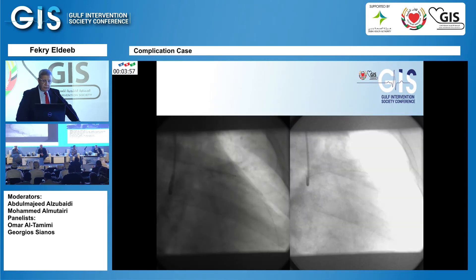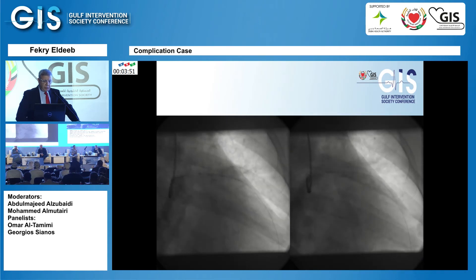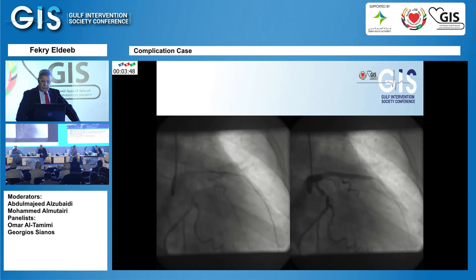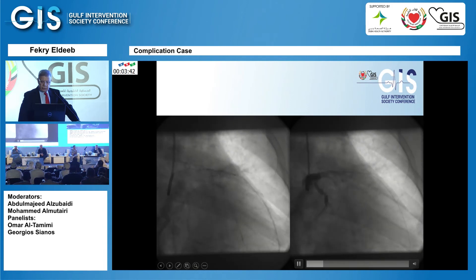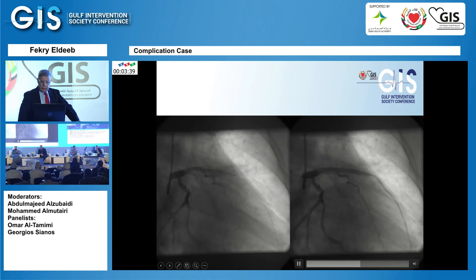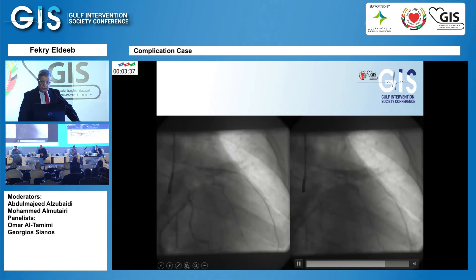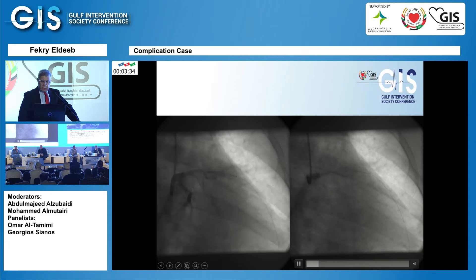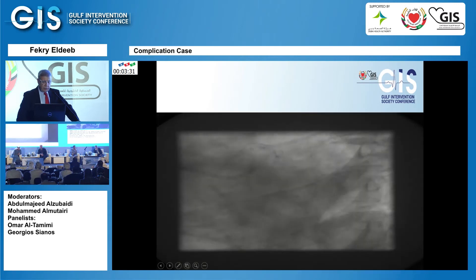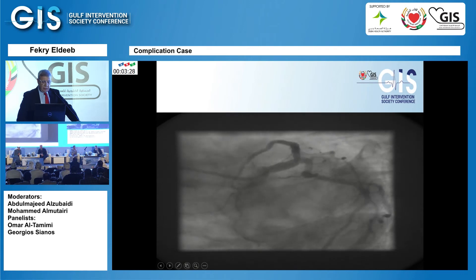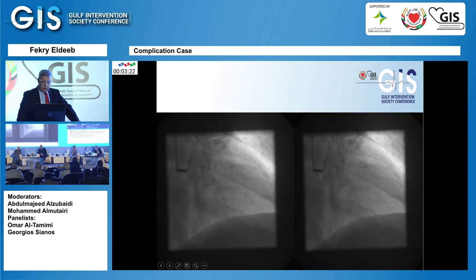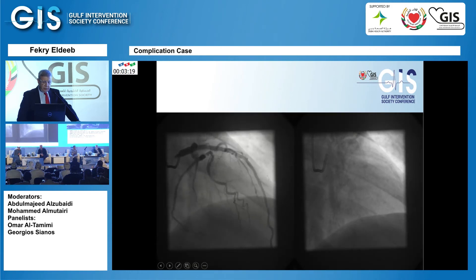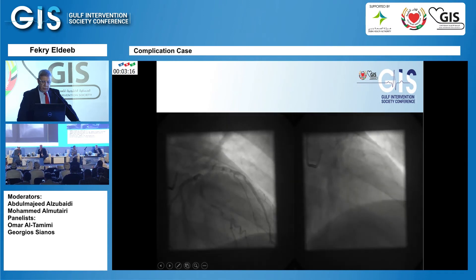Eventually I was able to redirect the wire into the true lumen. After confirming I was in the true lumen, I positioned my first stent, sealing the proximal part of the dissection. You can see on the second panel that LAD flow was restored, but it was not optimal — I had not completely sealed the hematoma with one stent — so I overlapped with another stent. Then I optimized with high-pressure balloon, and the LAD was nicely open with good flow.